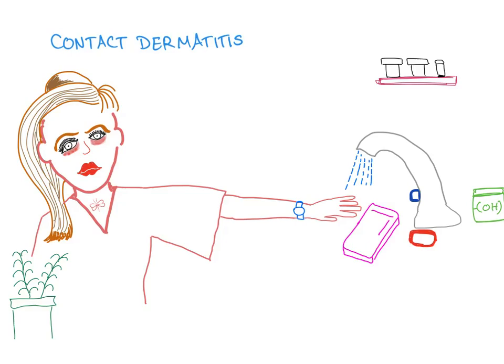Hi, this is Metacosis Perfectionalis. Let's talk about contact dermatitis. Itis means inflammation, derm means skin. So it's a skin inflammation due to contact with a substance.